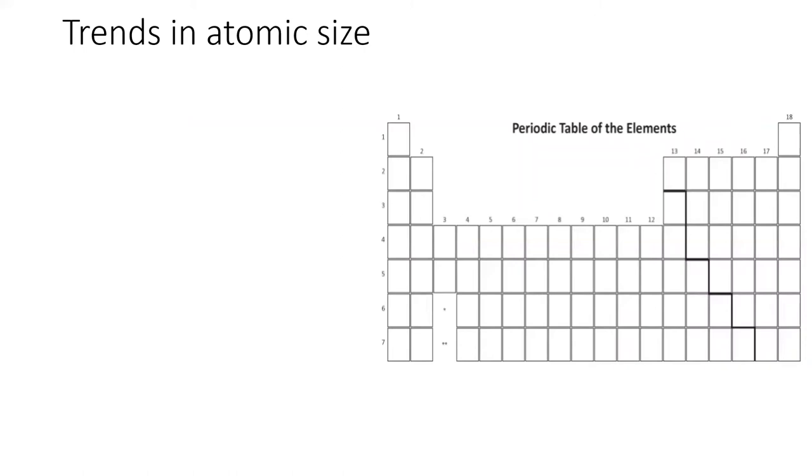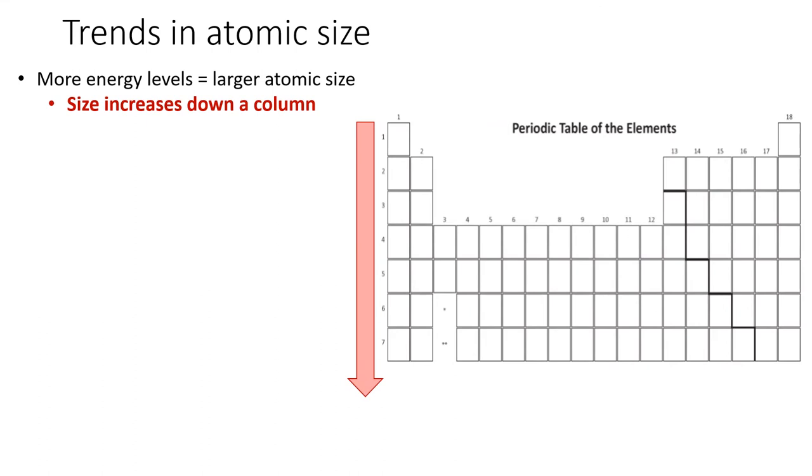As we saw with effective nuclear charge, there is a periodic trend to atomic radius, which arises from the interplay of proton attraction and orbital energy level. As we go down the table, we add more energy levels, which leads to a larger atomic radius.